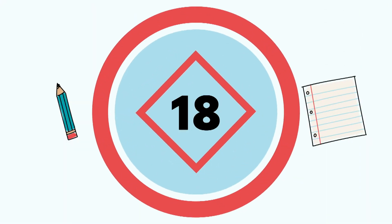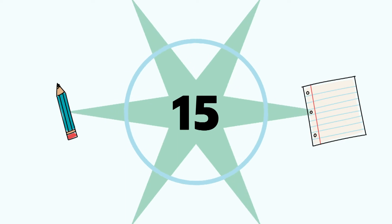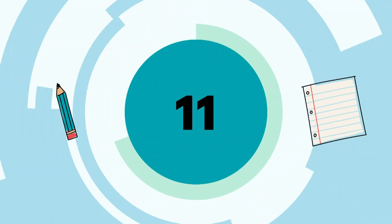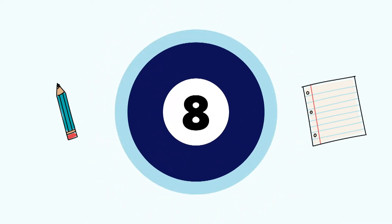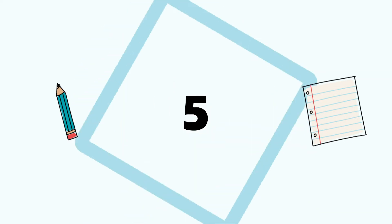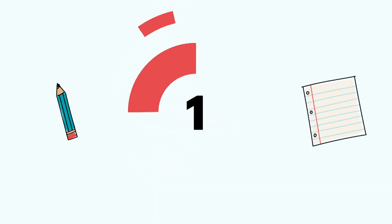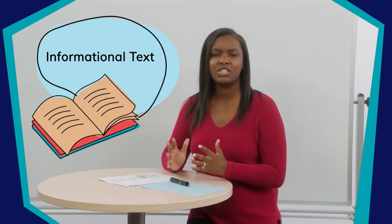Hi everyone, I'm Mrs. Wright and I'm so excited to be learning with you today. Today, you'll need a writing utensil and paper to jot some ideas down. While you grab your items, I'll go grab mine. All right, friends, I'm back with my paper and my writing utensil. I grabbed a marker, but a pen, crayon, or pencil — those all work fine too. Today friends, we're going to dive into the world of informational text.